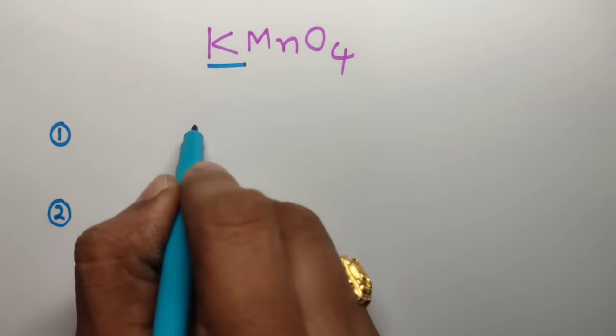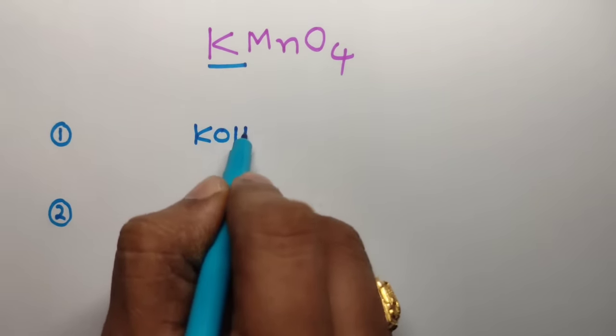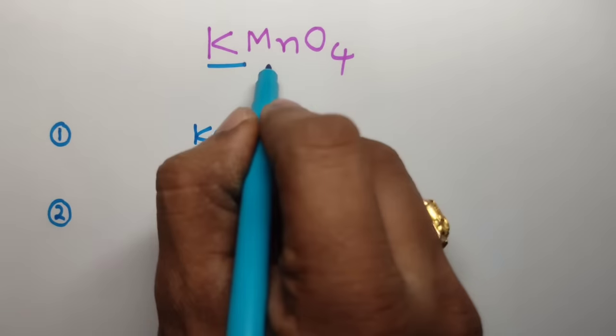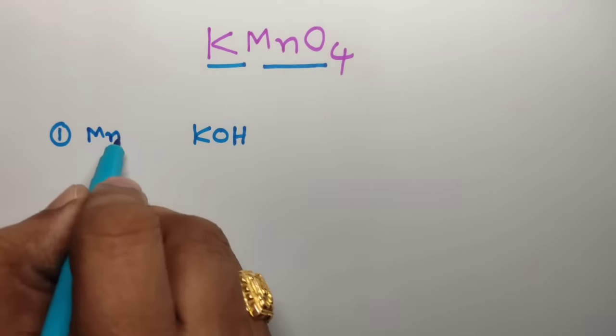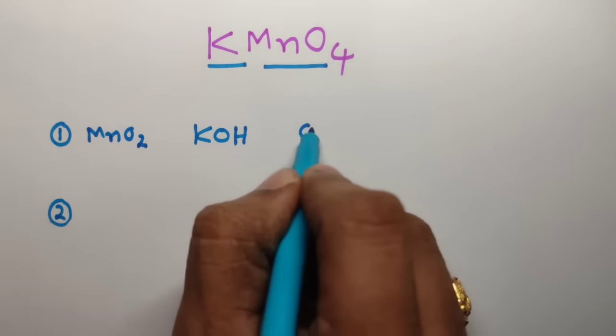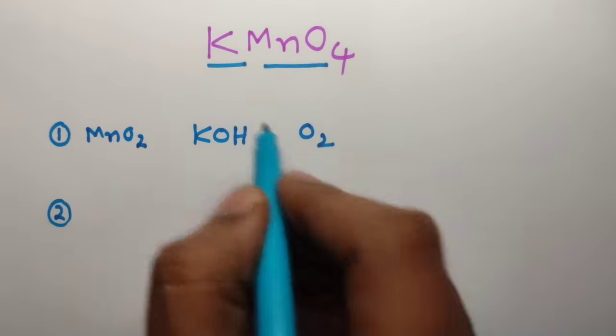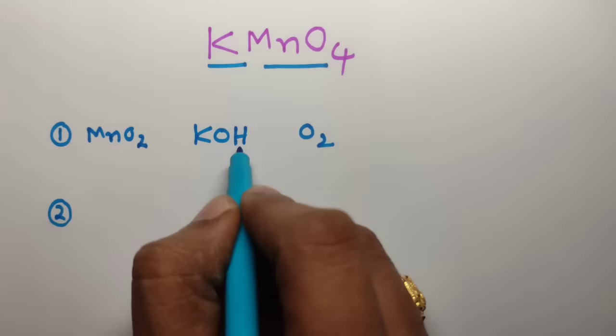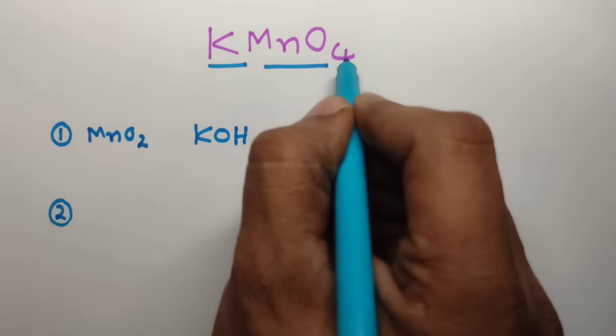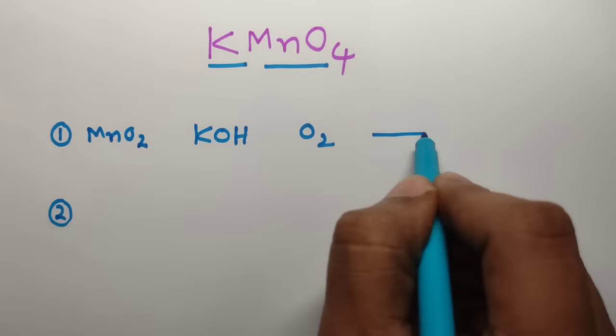Remember K for KOH, and MnO4 you can split into MnO2 plus O2. Once again, K for KOH and this MnO4 you can split into MnO2 plus O2.